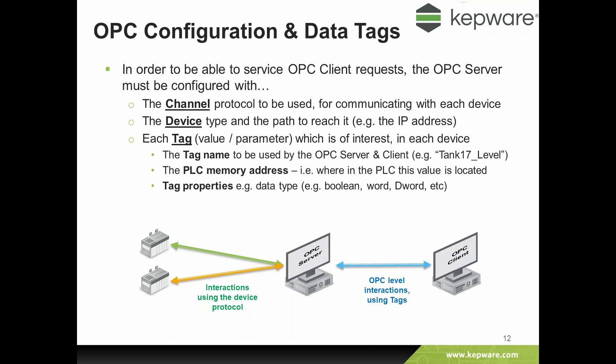Then the list of tags can be added to the configuration. These are the values within the PLC which are of interest to the client applications. Each tag has a name that is meaningful in the client application — for example, 'Tank17_Level', which would be the level in tank number 17. The OPC server must know how to reach the correct PLC address to get that value, so each tag has a PLC memory address allocated to it, along with other properties such as the data type — whether the tag is a boolean (one or zero), a word, a data word, or other data types.